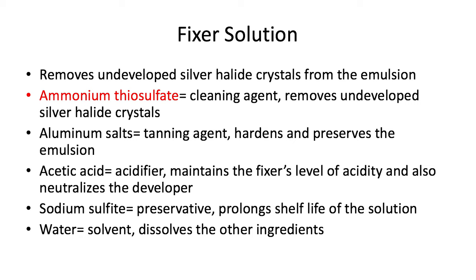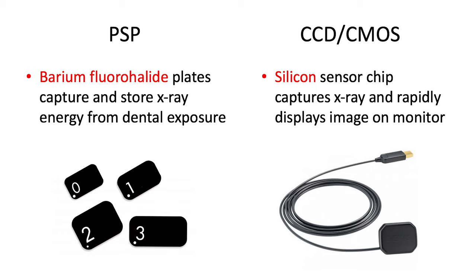The fixer solution removes the undeveloped silver halide crystals from the emulsion — it keeps the black metallic silver we want and removes all the other unexposed material. Ammonium thiosulfate is the workhorse that does the cleaning. Other components include: aluminum salts, which harden and preserve the emulsion; acetic acid, which maintains acidity and neutralizes the developer; sodium sulfite, a preservative that prolongs shelf life; and water, which acts as the solvent that dissolves the other ingredients.